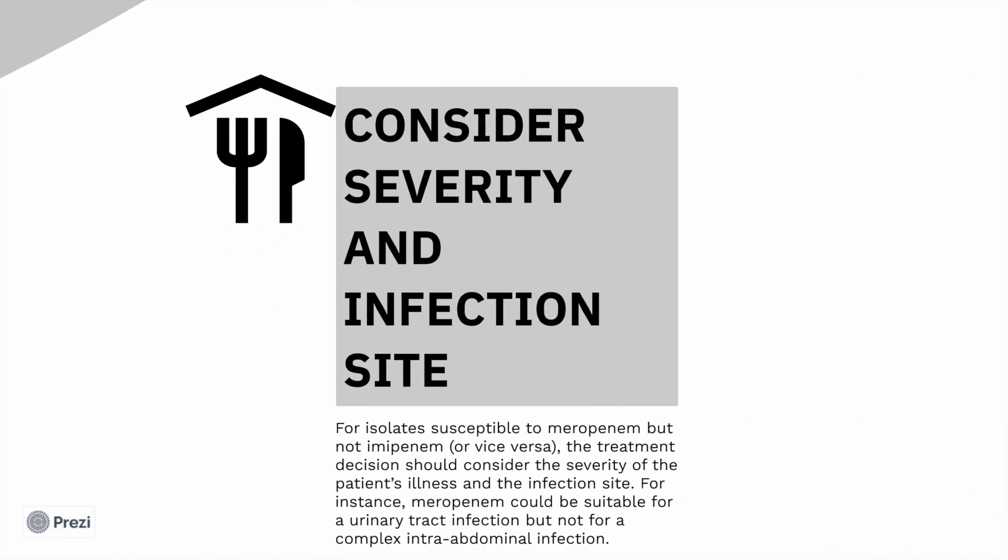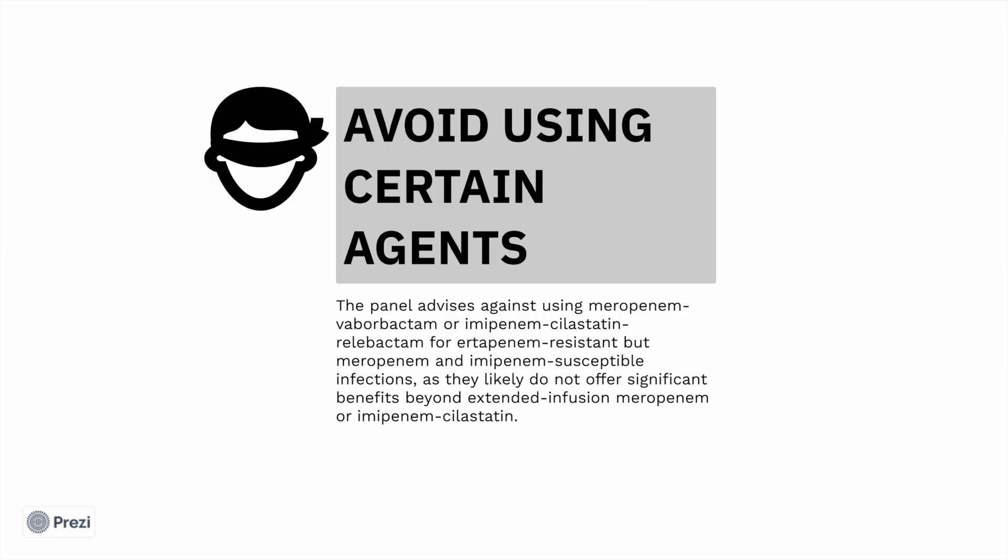For isolates susceptible to meropenem but not imipenem, the treatment decision should consider the severity of the patient's illness and infection site. For instance, meropenem would be suitable for urinary tract infection but not for a complex intra-abdominal infection. Avoid using meropenem-vaborbactam, imipenem-cilastatin-relebactam for ertapenem-resistant but meropenem/imipenem-susceptible infections, as these agents likely do not offer significant benefit beyond extended infusion of meropenem or imipenem.